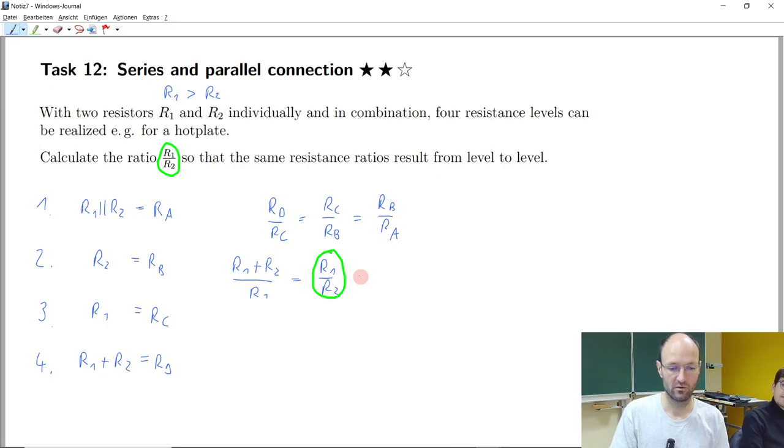And we also have RB, which is R2 divided by this parallel connection. So I will at first write it like this. And so for this parallel circuit, what I could also write,